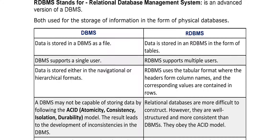In DBMS, there is a single user interface — only one user can connect at a time. For example, if we have 3 users A, B, C, and A is already connected to the database, then B and C cannot connect. But in RDBMS, there is a multiple user interface — multiple users can log in in parallel simultaneously.